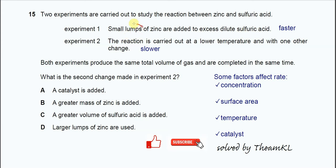Since it's mentioned small lumps, the smaller particle size of zinc means the surface area is higher, so the reaction is going to be faster. Experiment 1 uses smaller particles of zinc so the reaction will be faster. Second experiment: the reaction is carried out at lower temperature with one other change. Lower temperature means the rate of the reaction is getting slower because lower temperature equals lower kinetic energy, and it's together with one other change.